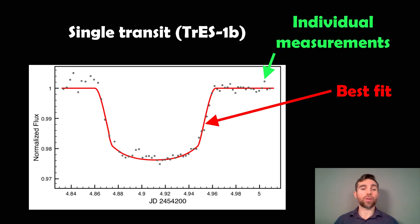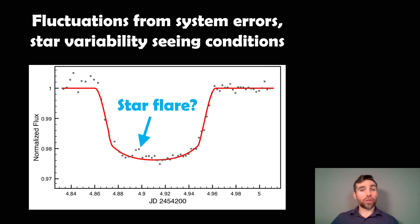An example of a single transit is TRES 1b. Each of those gray points is a single image where they've calculated the flux or magnitude from the star and plotted it against time, which is along the bottom. The time is actually a date in days, so you've got like 4.84 days from that date. The red line is a best fit to those data points, and you can see they haven't got a huge amount of individual points there. You get some fluctuations and they don't fit exactly onto that trend line.